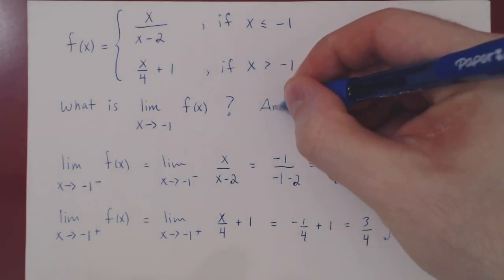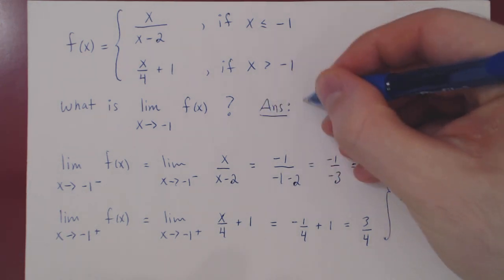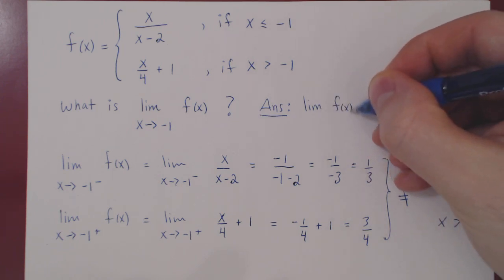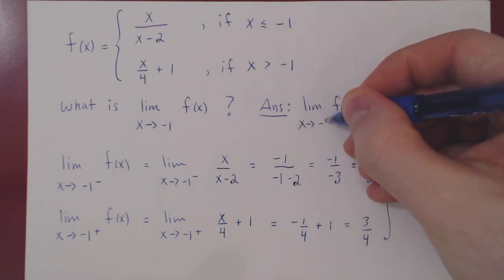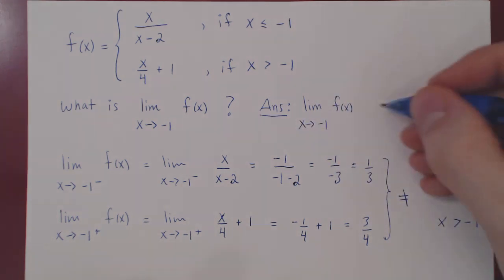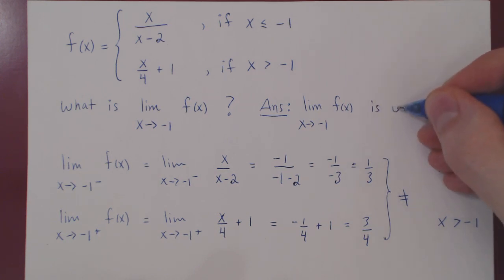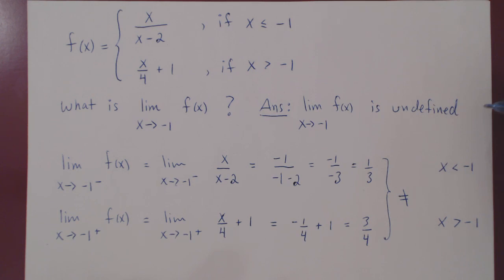So we have our final answer. The two-sided limit of f of x as x approaches negative 1 is undefined, since the limit from the left equals 1 third and the limit from the right equals 3 quarters. And we're done.